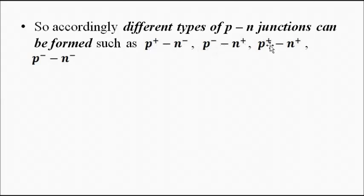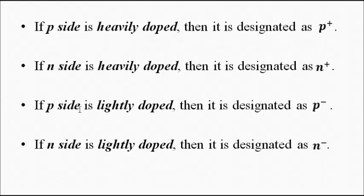Accordingly, different types of PN junctions can be formed such as P+N-, P-N+, P+N+, P-N-, and so on. This is important because it all comes into play in the construction of the power diode. Depending on the doping concentrations, these sign conventions are used.